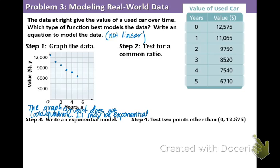Because we think it may be exponential, we want to test for a common ratio. Which means multiplying by the same number. Take a look at the table. You can see that the years are going up by one. Now let's look at the Y values.